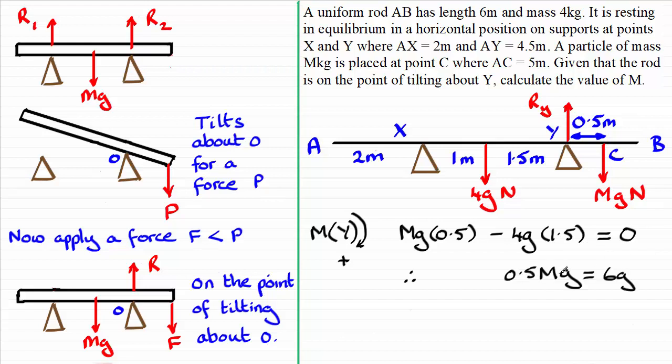And then just simply dividing both sides by 0.5G. Then the G's cancel out. And I'm just left with M equals 6 over 0.5, which gives us M equaling 12.